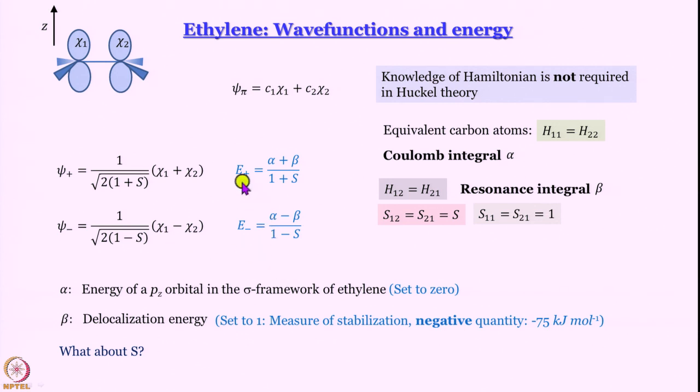And the associated energies were E plus equal to alpha plus beta divided by 1 plus S, and E minus is alpha minus beta divided by 1 minus S. And the interesting thing is that you do not need to know the Hamiltonian for Huckel theory. You actually work it out in terms of the integrals where Hamiltonian is just written as H.